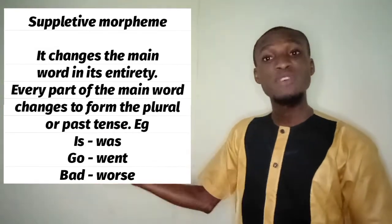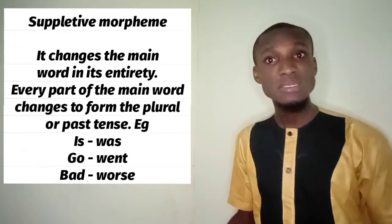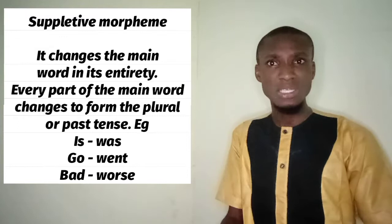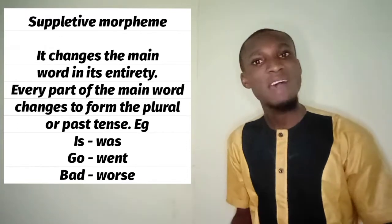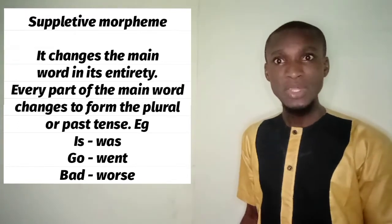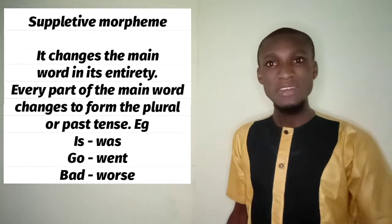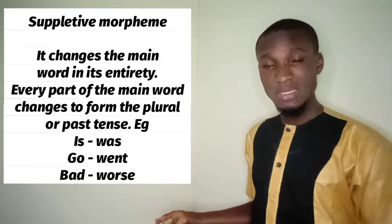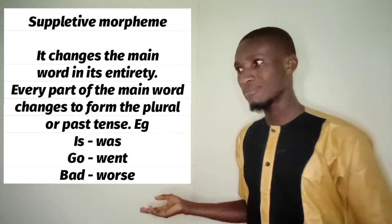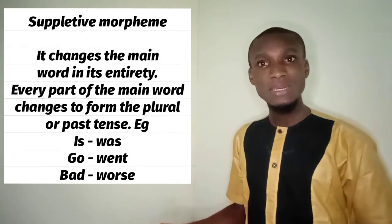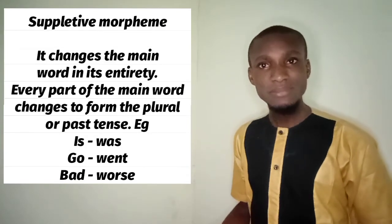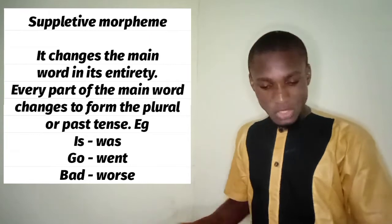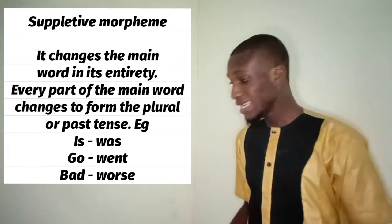We also have the comparative of 'bad' — the word becomes 'worst'. What does W-O-R-S-T have to do with B-A-D? And 'good' becomes 'better' — that is suppletive on its own. We also have the verb 'to be': 'I am', 'we are' — it changes the word entirely in different forms.